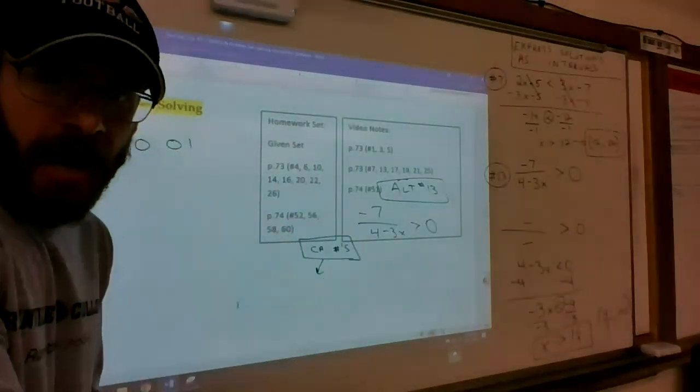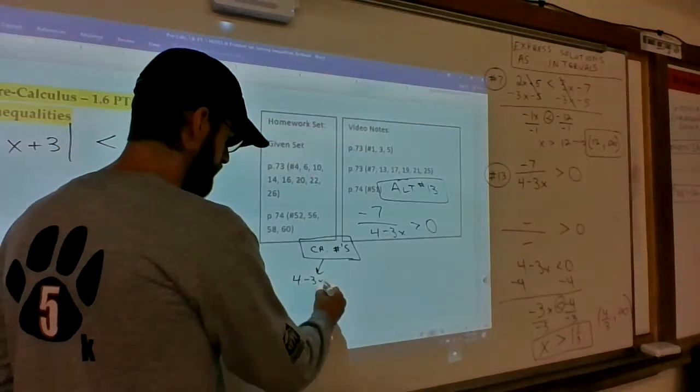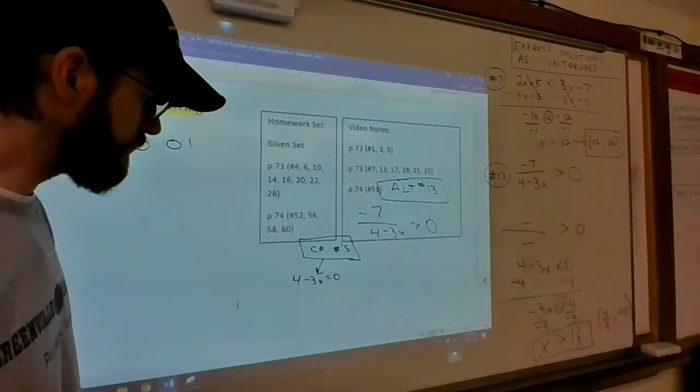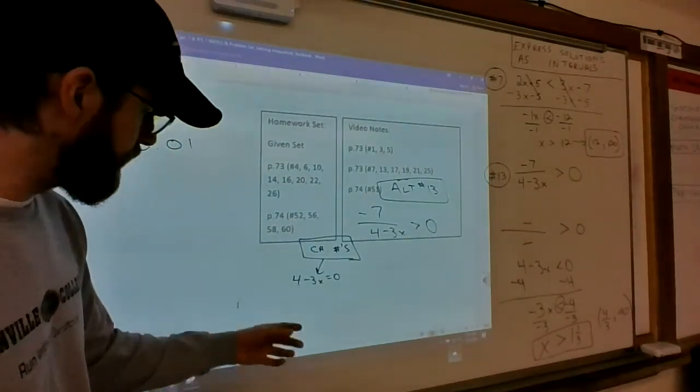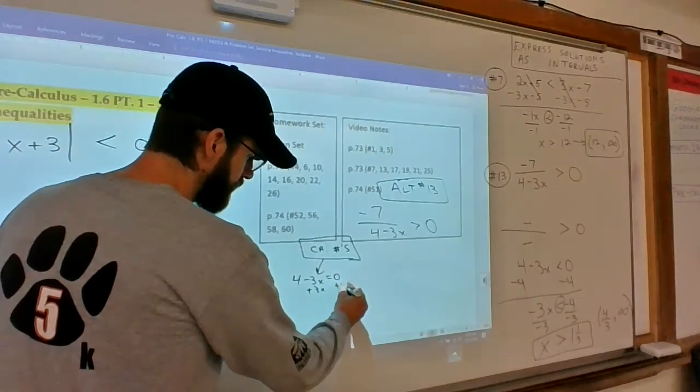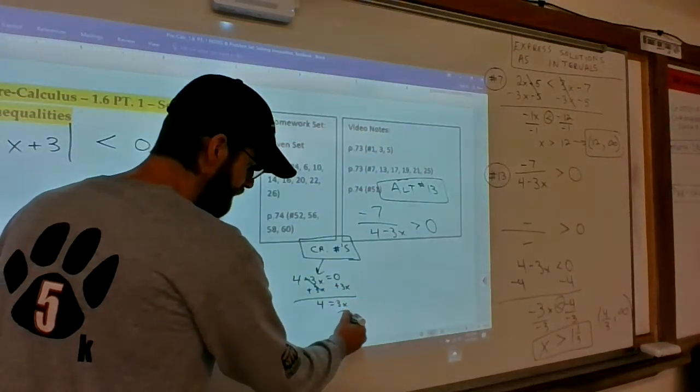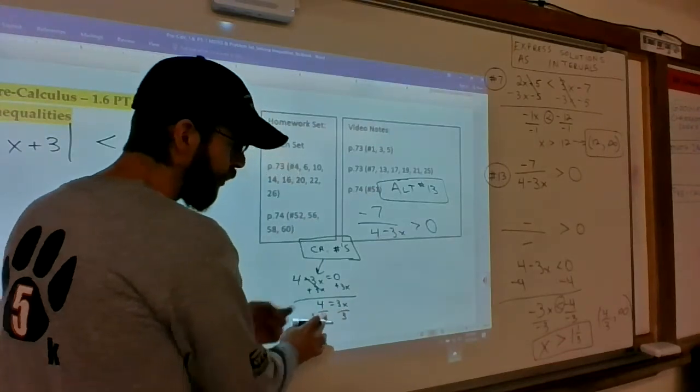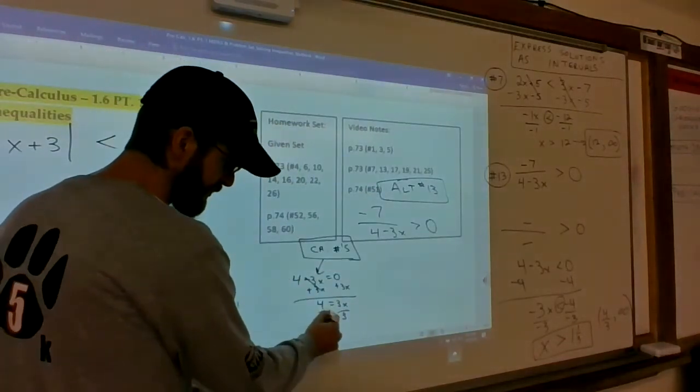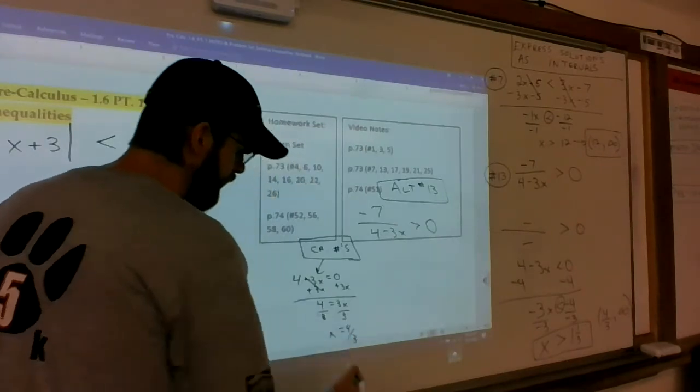In this case, it's just the bottom equaling zero as a critical number. You can solve this equation by adding 3x and then dividing by 3. We know that was 4/3 because we solved it already. So x equals 4/3 is a critical number.